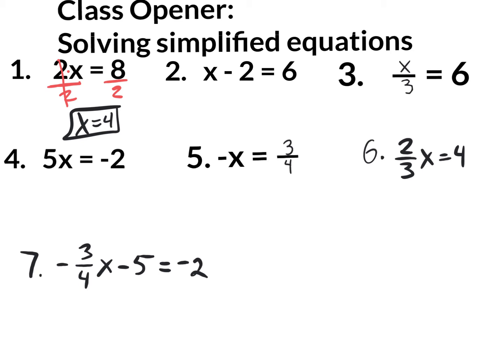Number 2 says x minus 2 equals 6. What do I do to get rid of that minus 2? Add 2. What you do to one side you must do to the other to maintain the equality. The 2s cancel out. The x comes down, the equal sign comes down, and 6 plus 2 is 8. So x equals 8.